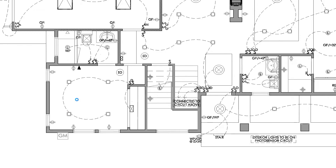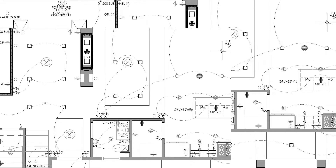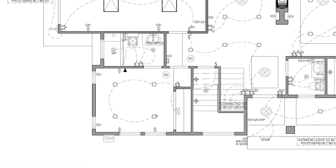As an example, let's go to this bedroom. As we can see, there are these four symbols with a square and a circle inside. If we go to the legend, we can find it here, and we can see that this is for a four-inch recessed downlight. If we go again to the plan, we can see that there is a dashed line here joining these four lights, because these four are in the same circuit. These dashed lines are always going to reflect the circuit.